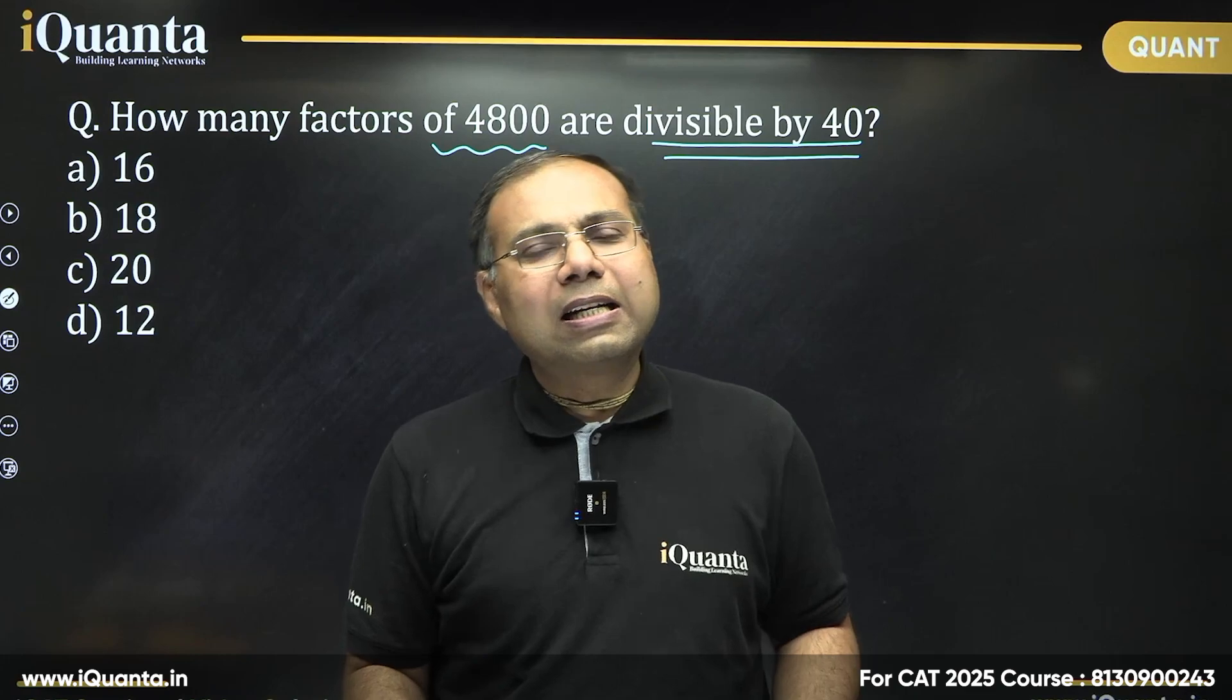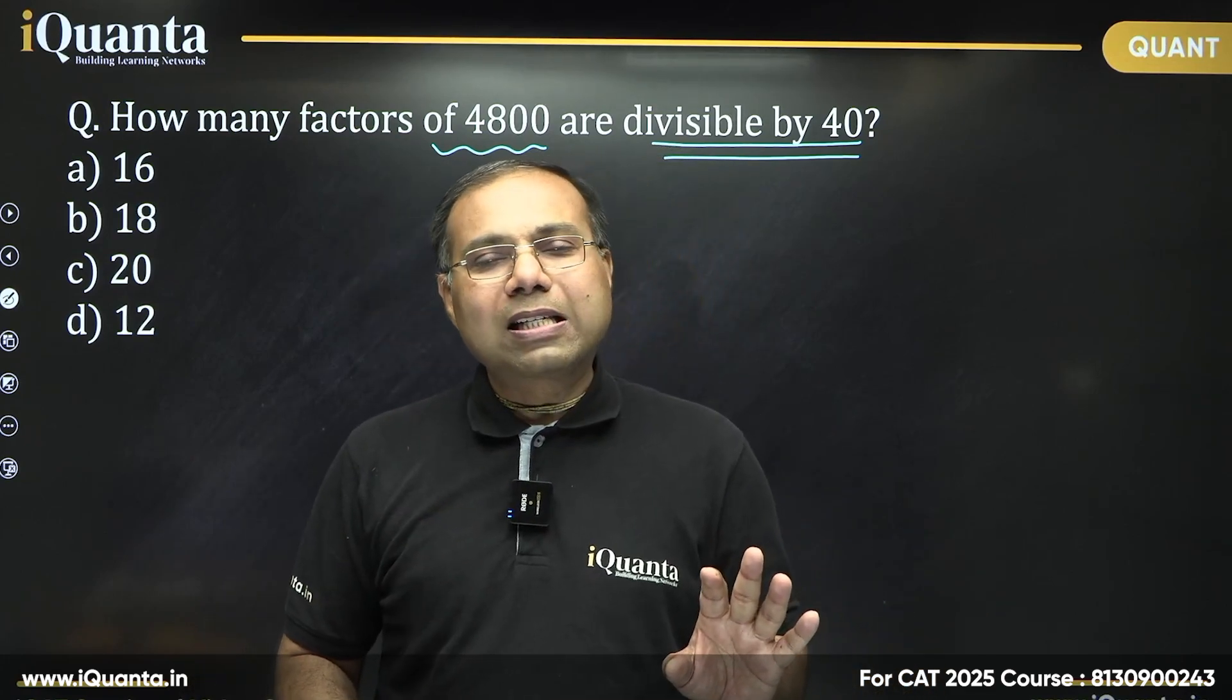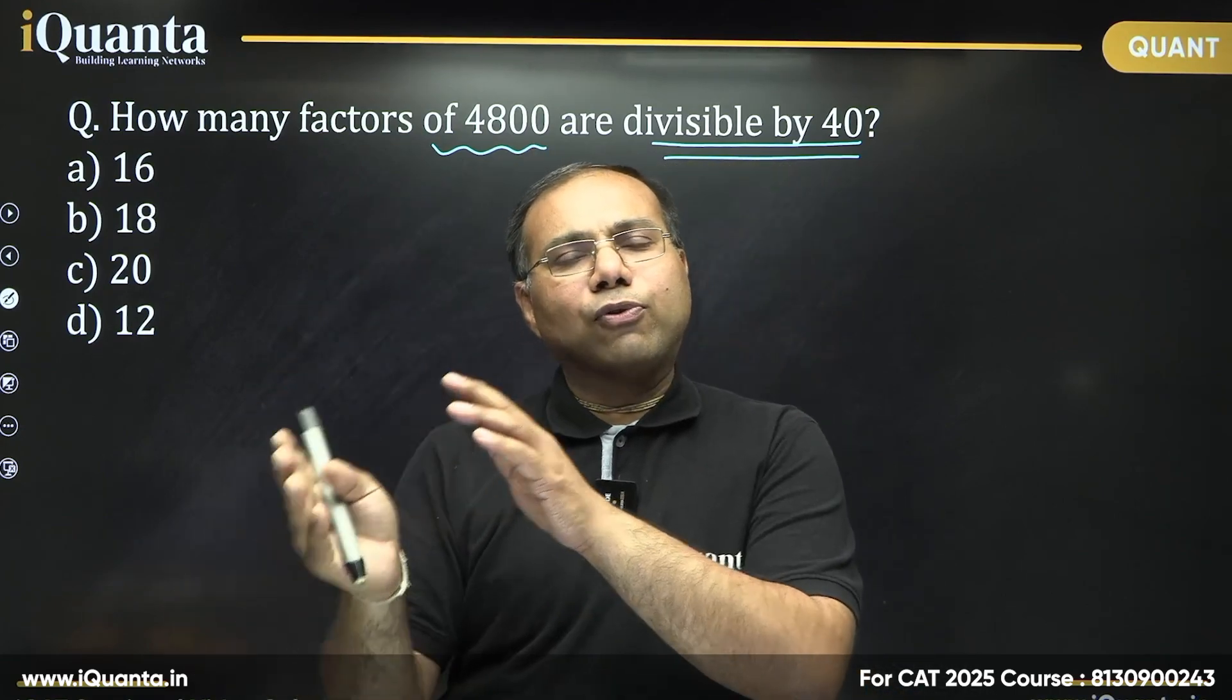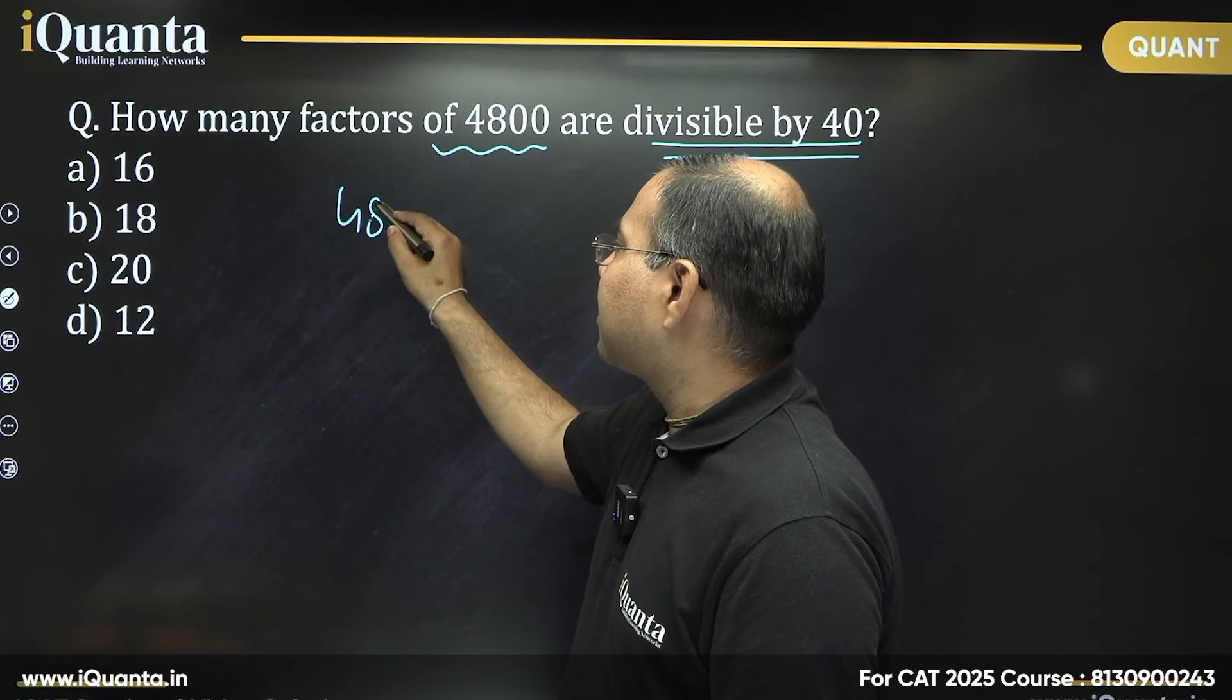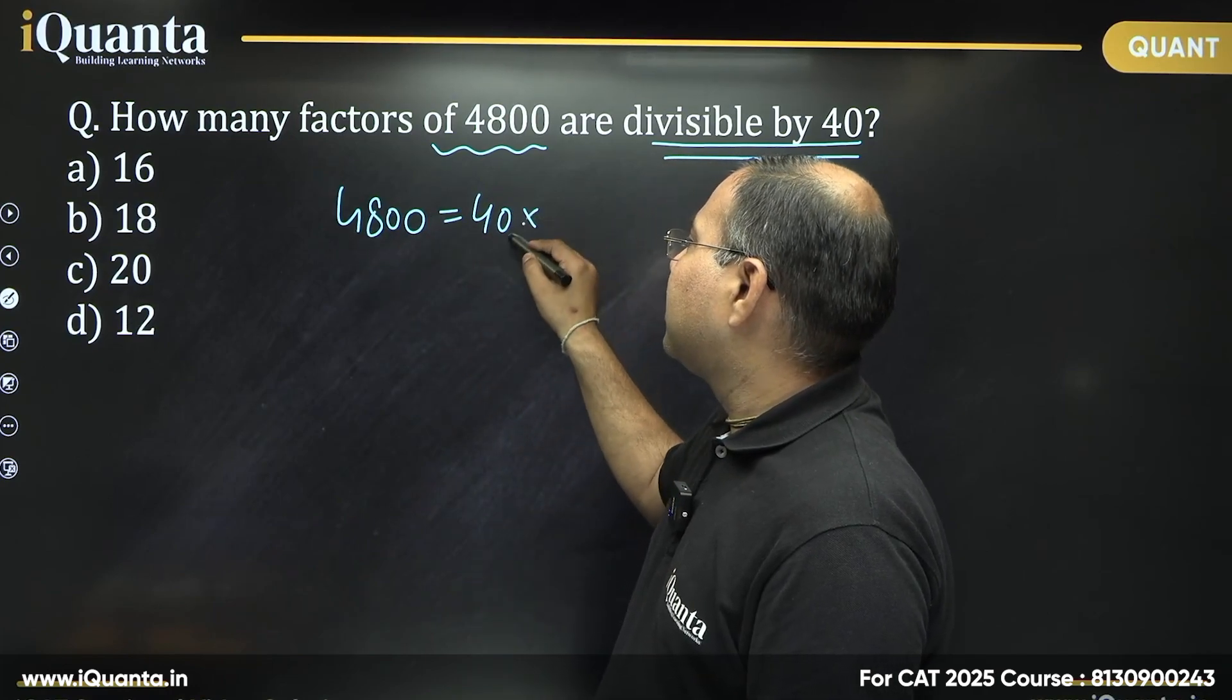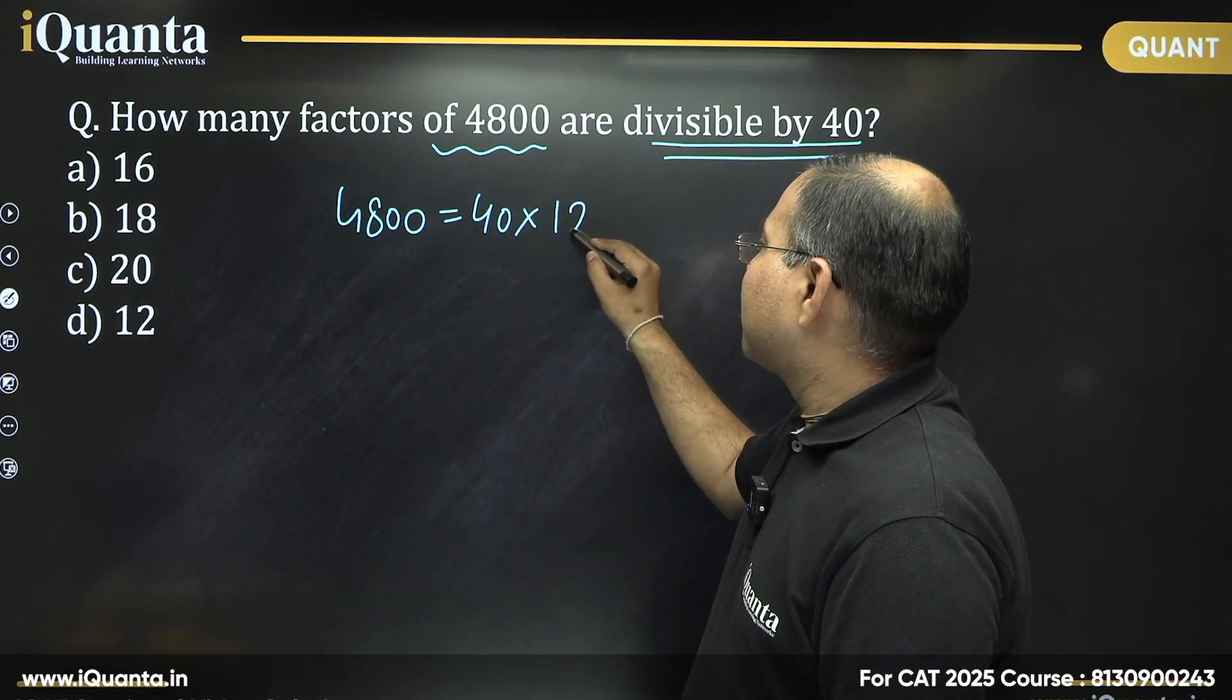So how to find that? A very easy thing. The simplest way always is write first this number 4800 as multiple of 40. It is 40 times how much? Can you tell me? 4800 is basically 40 into how much? 40 into 120. Yes, that is correct. So it is 40 into 120.